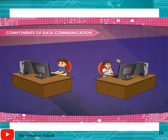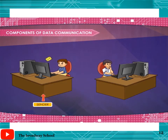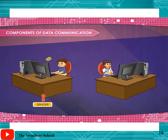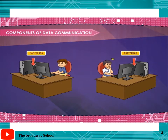Components of Data Communication. Message: the message is the information to be communicated. Sender: the sender is the device that sends the data message. Receiver: the receiver is the device that receives the message. Medium: the transmission medium is the physical path by which a message travels from sender to receiver.